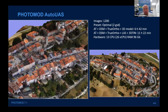Another sample with 1,200 images — processing time is larger: 11 hours for the complete model and 6 hours for the fast model. Here slightly different hardware was used: 96 GB of RAM and 13 physical / 26 virtual cores.